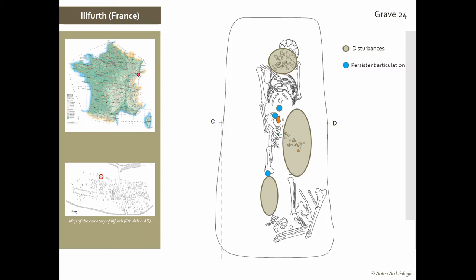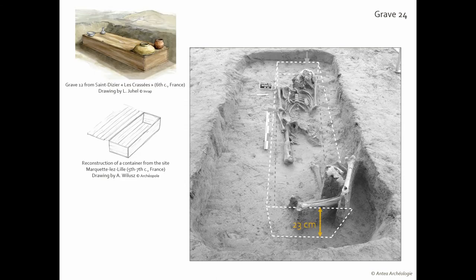Moreover, the way the bones are spread — without many damages and quite far apart — indicates an intervention that occurred in empty space, which means the body was buried in a container and, most importantly, this container was still preserved when the disturbance happened. The disturbed bones are in the northeast corner of the grave and lie about 23 centimeters above the bottom. The most likely theory is that when the grave was reopened, the bones were deposited on the lid of the container, which vanished afterwards. This height of 23 centimeters is consistent with other medieval coffins discovered in France from roughly the same period.